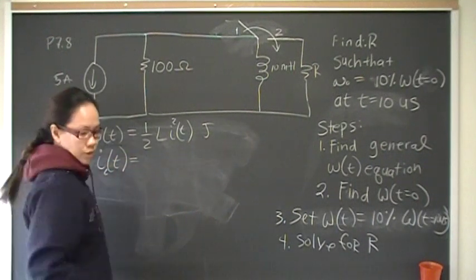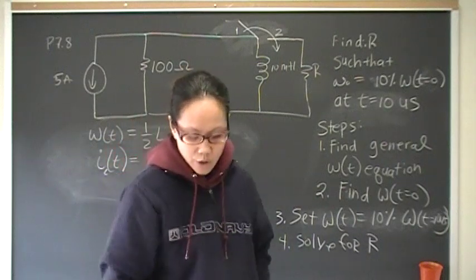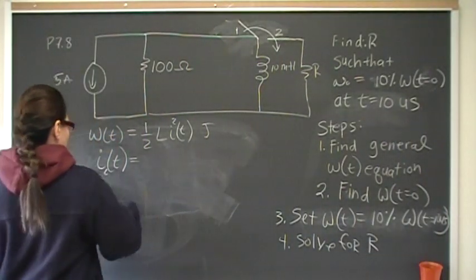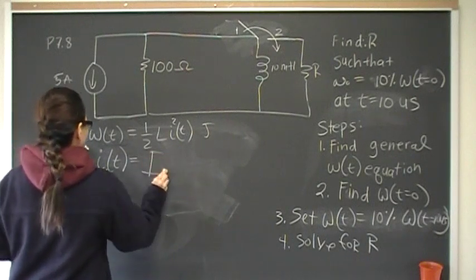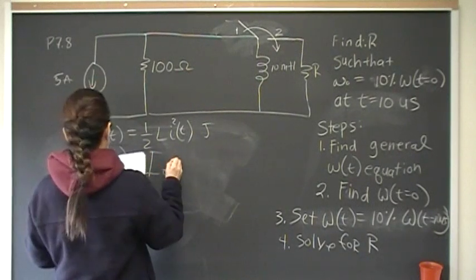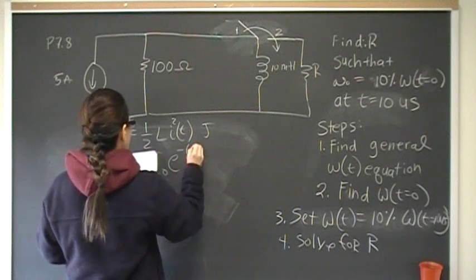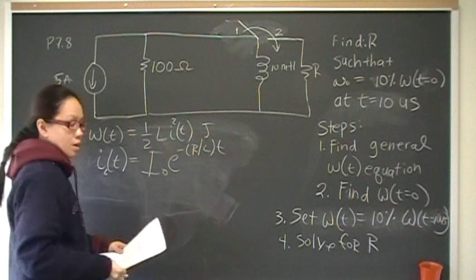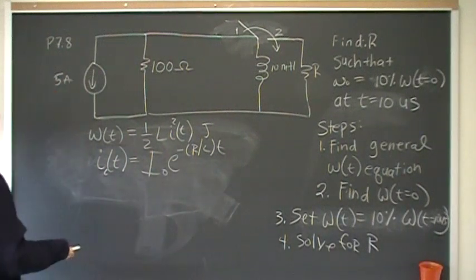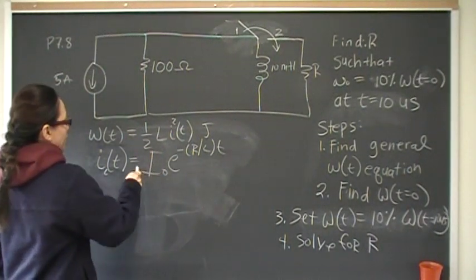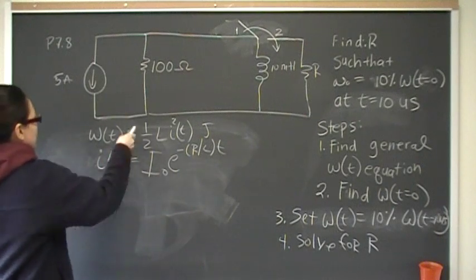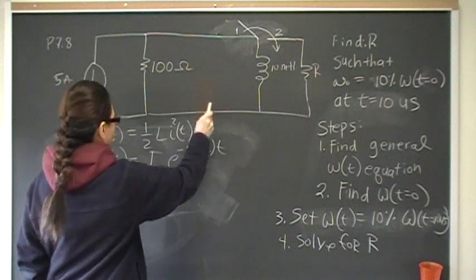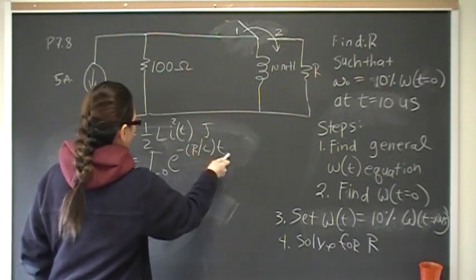IL of T is equal to, this is not something that I know off the top of my head, so it's going to be I naught, which is the independent current source, times E to the negative R L of T. So basically, this is saying that whatever is the value of the current through the inductor is going to be this current source and value of R, L, and T.